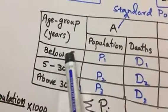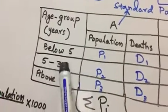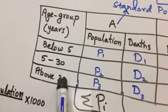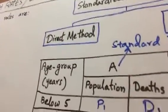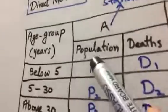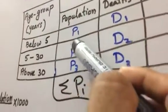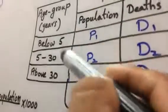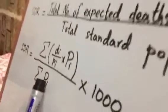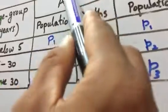Below five years, five to thirty years, above thirty years. We have population from standard population, town A. We are denoting capital P1, capital P2, capital P3, and we add it to get summation Pi. This is denominator side. And d1, d2, d3 are deaths from town A.